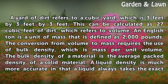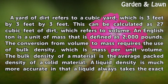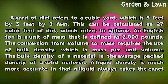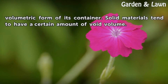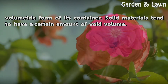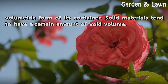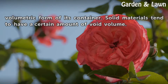An English ton is a unit of mass that is defined as 2,000 pounds. The conversion from volume to mass requires the use of bulk density, which is mass per unit volume. The bulk density of a material is the average pack density of a solid material. A liquid density is much more accurate in that a liquid always takes the exact volumetric form of its container. Solid materials tend to have a certain amount of void volume.